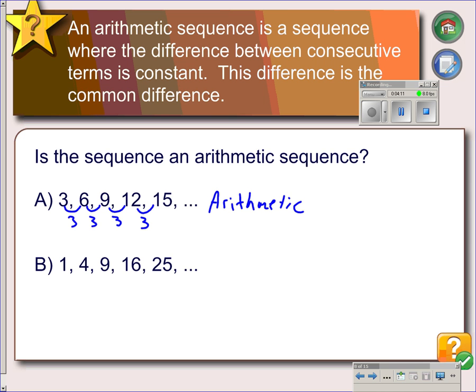In example B here, the difference between these two—four minus one is three, five minus four—nine minus four is five. Sixteen minus nine is seven. And so this is not a common difference. So this one is not arithmetic.